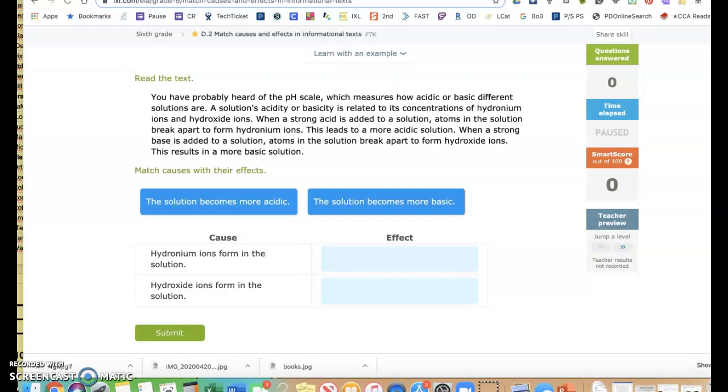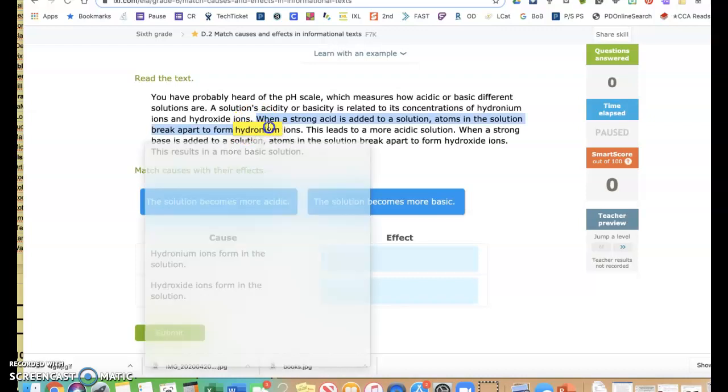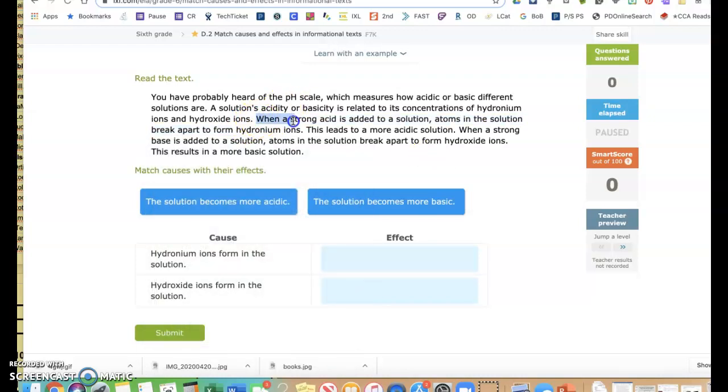When a strong base is added to a solution, atoms in the solution break apart to form hydroxide ions. This results in a more basic solution. So if my cause is hydronium ions form in the solution, I find hydronium ions. When a strong acid is added to a solution, atoms in the solution break apart to form hydronium ions. This leads to a more acidic solution. So that's my effect.